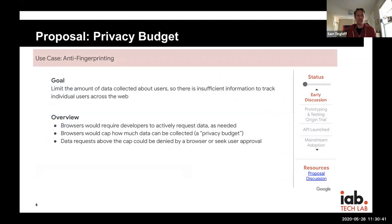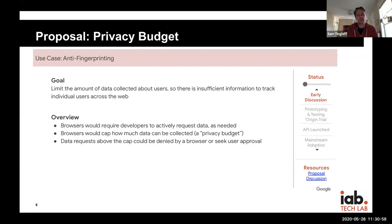One of the most important proposals is Privacy Budget, which is about how publishers and third parties access detailed user-level or device-level information that would be consistent across publisher sites — such as screen resolution or IP address. The Privacy Budget says that a given site only has so many privacy 'dollars' to spend to access that information. If a site or third parties are interested in IP address and user agent data, they may not be able to access other pieces of information.